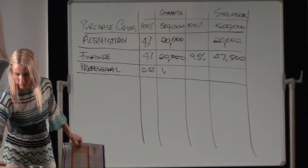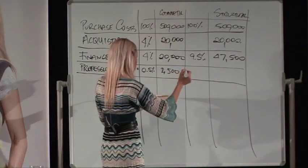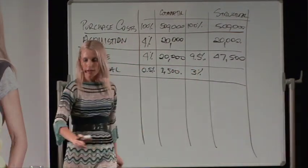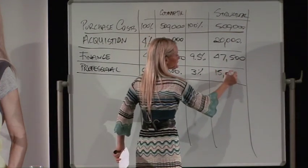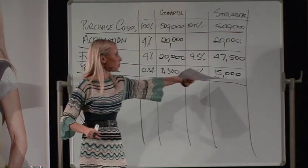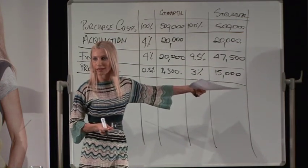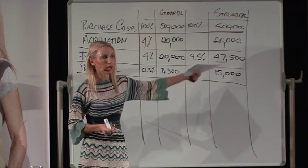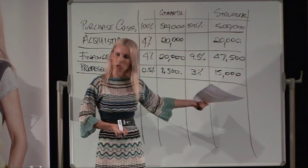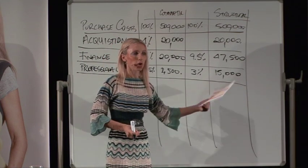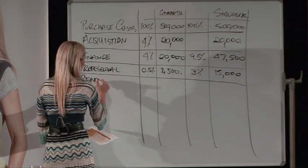For a structural renovation, professional costs are 3% of the purchase price — so on a $500,000 house that's $15,000. That covers your architect or draftsman, structural engineering drawings, hydraulic engineering drawings, and surveyor. So $15,000 is your total budget for all of those things. If an architect is quoting more than that, it's too expensive. These are your budgets — don't go over them.